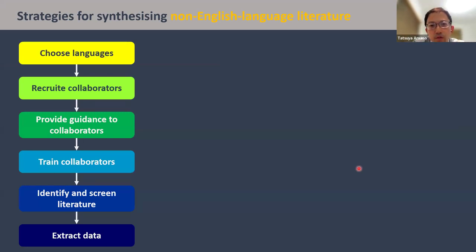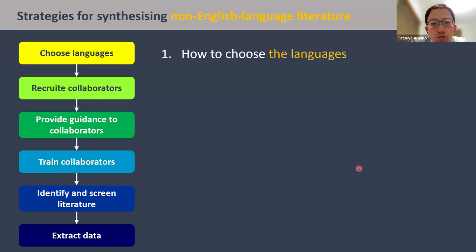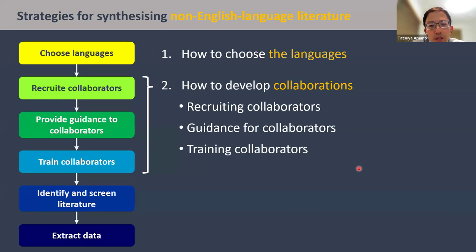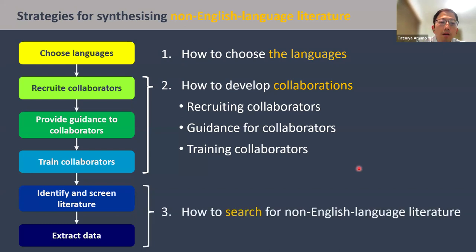Now that we know the importance of including non-English language literature in evidence synthesis, the question is how we can effectively synthesize it. I would say there are three main stages: first, we need to choose the languages that are relevant to our study; second, developing collaborations with native speakers of those relevant languages is the key to a successful synthesis; and the final stage is actually conducting the searches. I will talk about the approaches we adopted in our research at each of these three stages.